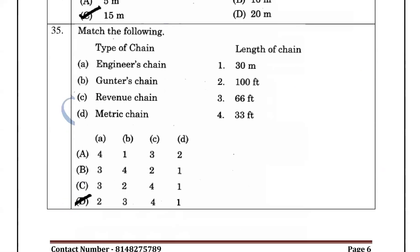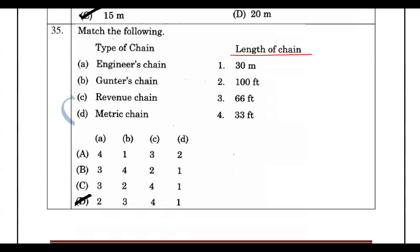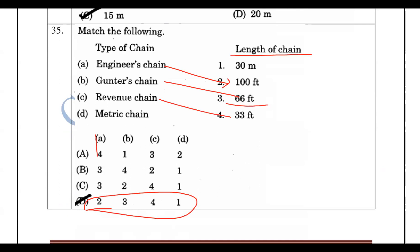Types of chain: the engineering chain is 100 feet with links of 1 foot each. The revenue chain is 66 feet. The metric chain is 20 or 30 meters in length.